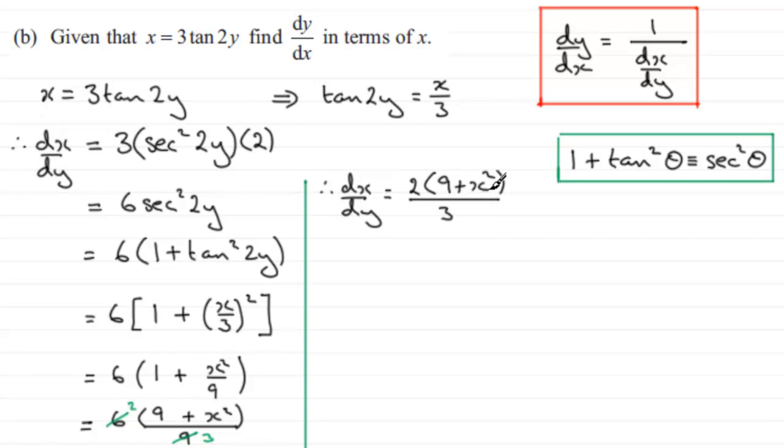Now that I've got this one term here, it's easy to get dy/dx because according to this rule it's going to be 1 over dx/dy, and that just means that all I've got to do to my fraction is invert it. So I've got 3 over 2 multiplied by 9 plus x squared.